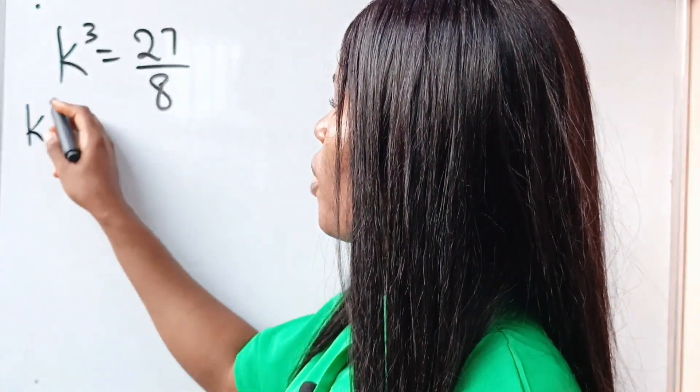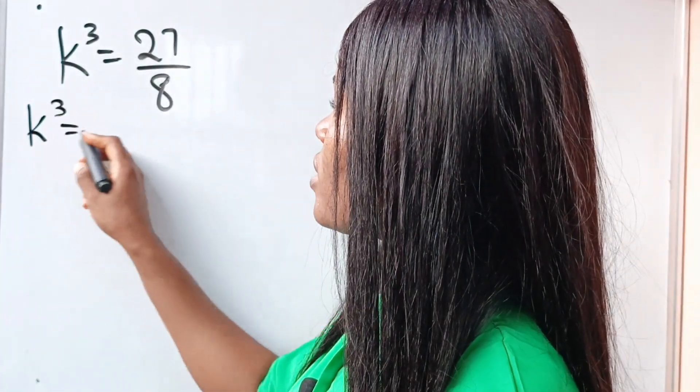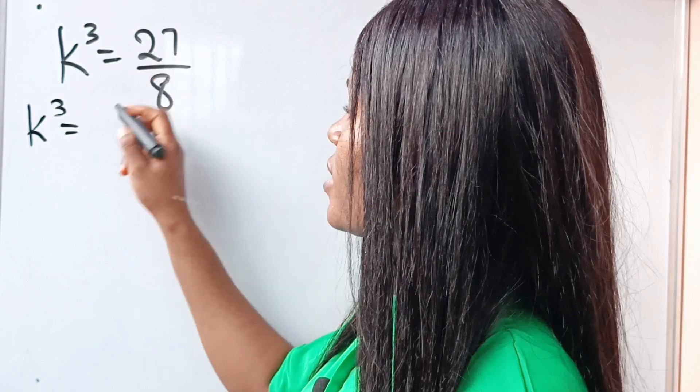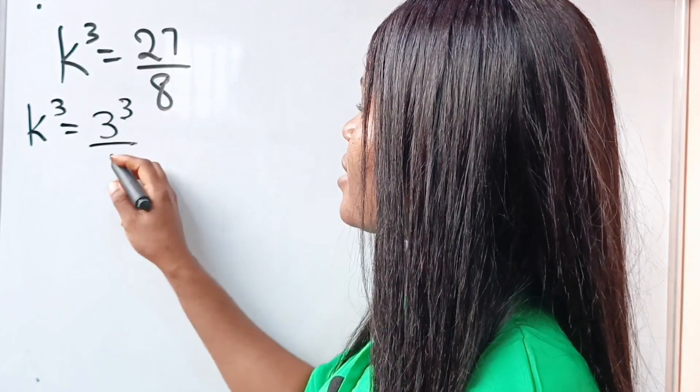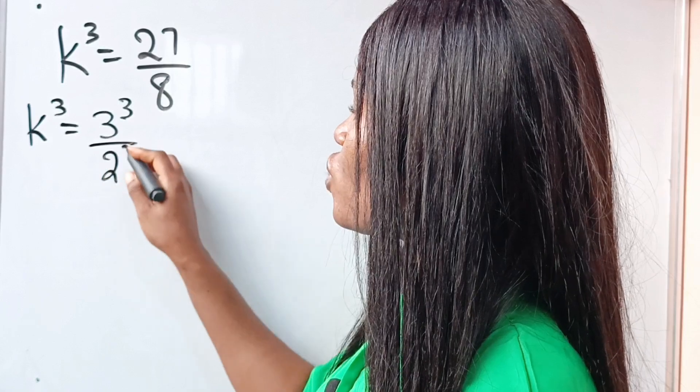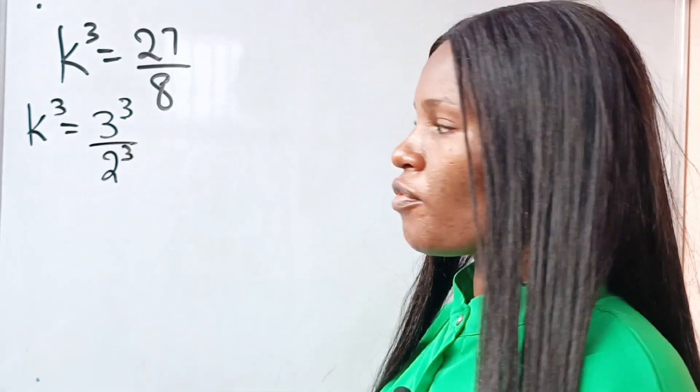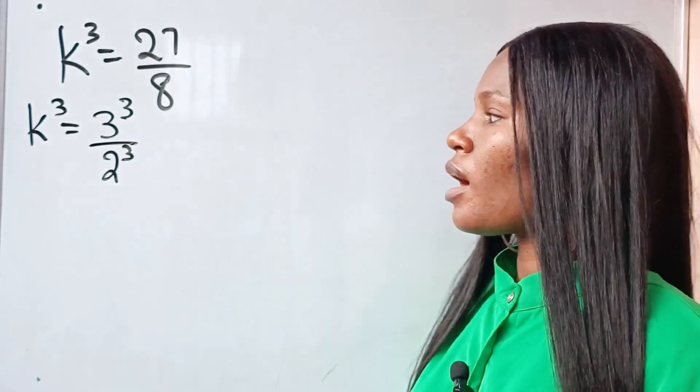So k to the power of 3 is equal to 27, written as 3 to the power of 3, and 8 is written as 2 to the power of 3.